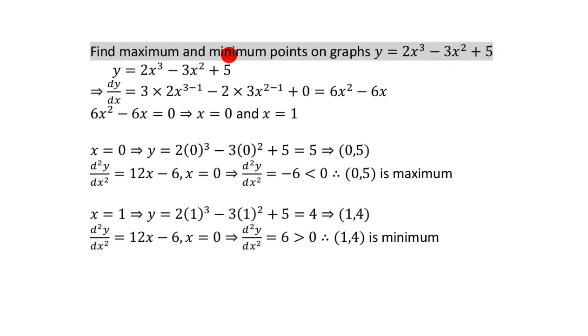Now, maximum and minimum points are on the parts of the graph where the gradient is 0. So, we've got to find out the formula that finds out the gradient anywhere on a graph. And how do you do that? You differentiate.